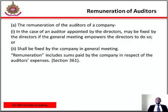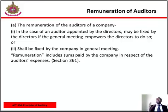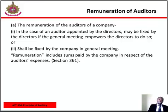Remuneration of auditors. The remuneration of auditors of a company — in the case of an auditor appointed by the directors — may be fixed by the directors if the general meeting empowers the directors to do so, or it shall be fixed by the company in the annual general meeting. Remuneration includes sums paid by the company in respect of the auditor's expenses, per Section 361 of CAMA.